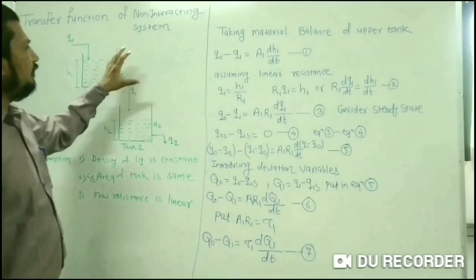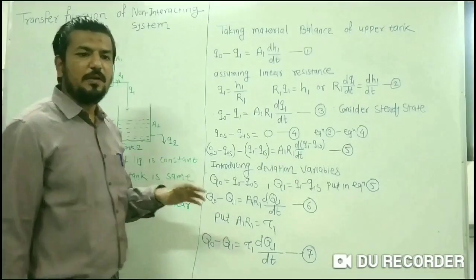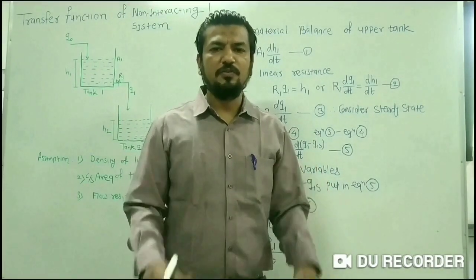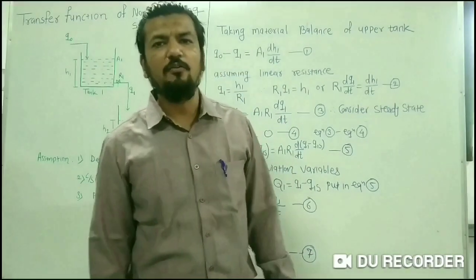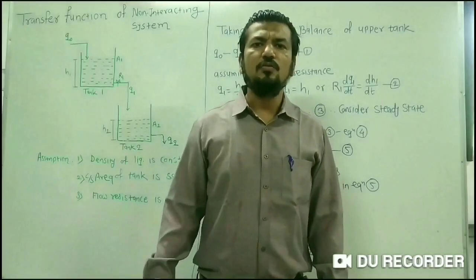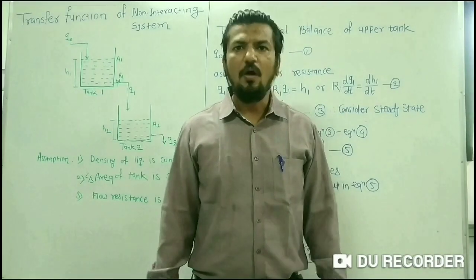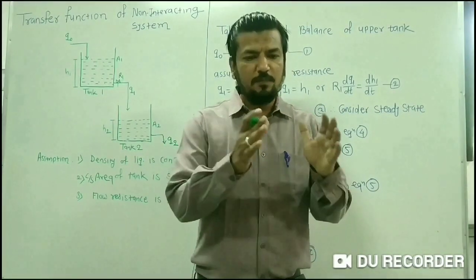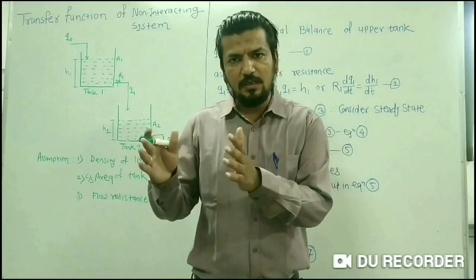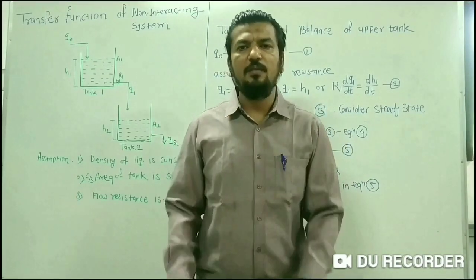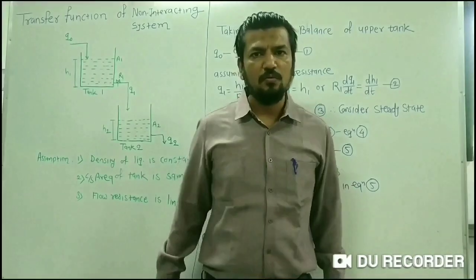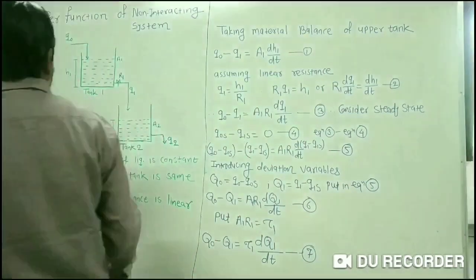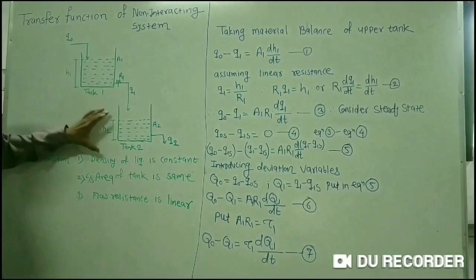Before determining the transfer function, we want to find what the transfer function of the non-interacting first order control system is. We know that the transfer function of a first order control system is Y(s)/X(s) = K/(1+τs). But what is the transfer function when these first order systems are arranged in series in a non-interacting manner? To determine this, consider a figure where two tanks are arranged in a non-interacting manner.